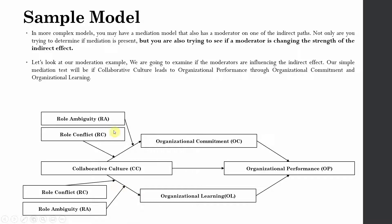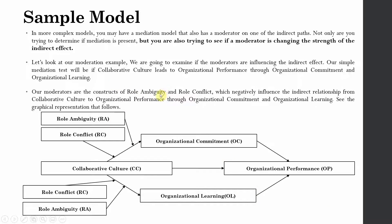Let us look at our moderation example. These are the 2 moderators that are moderating this indirect effect. The moderators are the same — this is just for the sake of understanding. We are going to examine if the moderators are influencing the indirect effect. Our simple mediation test will be if collaborative culture leads to organizational performance through organizational commitment and organizational learning. I am interested in finding out whether the strength of these indirect effects changes with the increase and decrease of role ambiguity and role conflict — that is multiple moderated mediation paths with multiple moderators.